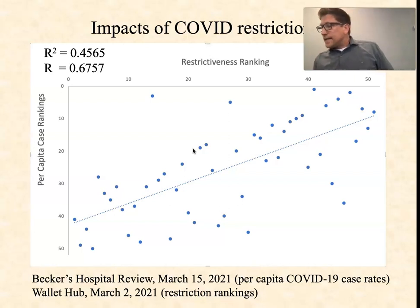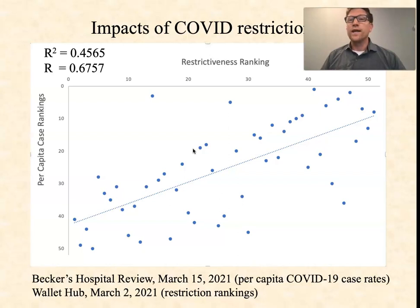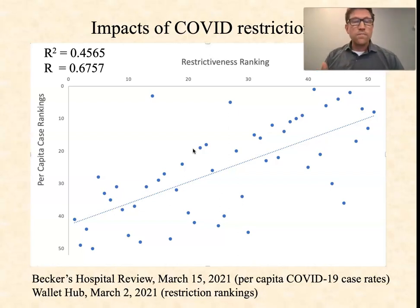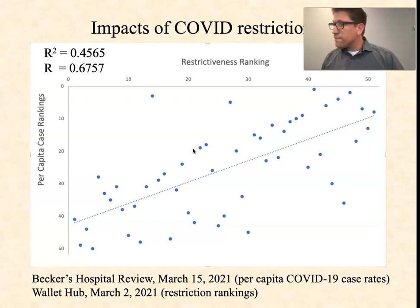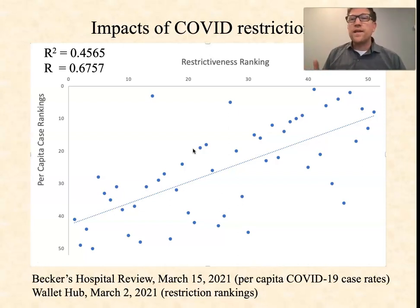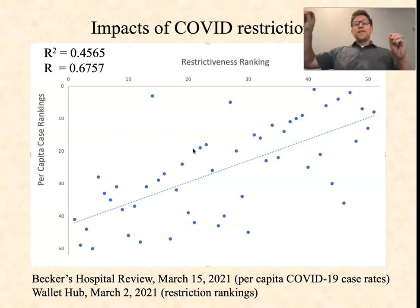Let me give you an example. The least restrictive state — ranked number 51 in the restrictiveness rankings, including D.C. — was Iowa. Iowa had the lowest ranking of restrictions through all of COVID up until at least March, and they ranked with the eighth highest caseload per capita in the country. So they were the least restrictive and had the eighth highest caseload. At the opposite end, the most restrictive was Virginia and it ranked 41st — way down close to the bottom. But generally speaking, the two extremes are good predictors, and everything in between largely is as well.